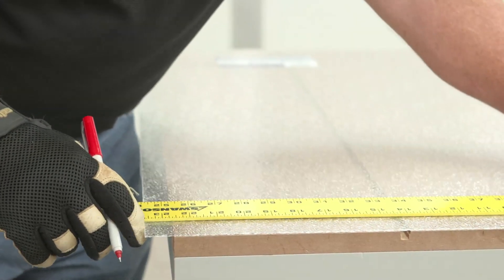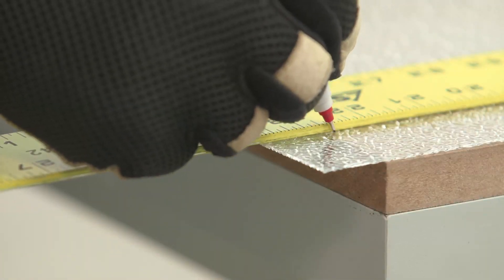The first step is to measure and mark the score lines. Be sure to work on the smooth side of the lighting panel.